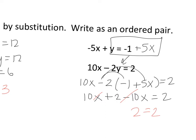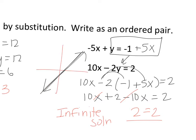So if 2 equals 2, my variable's dropped out. This statement is true, so it's infinite solution. If it was false, it would be no solution. So if I graph this, it would be two lines that intersect. It's a dependent, consistent system.